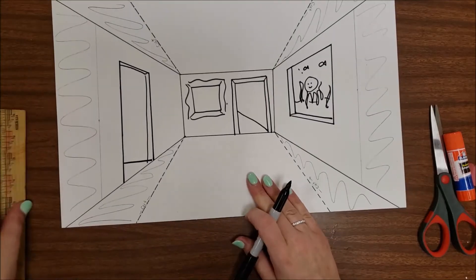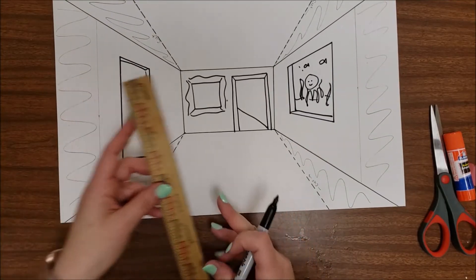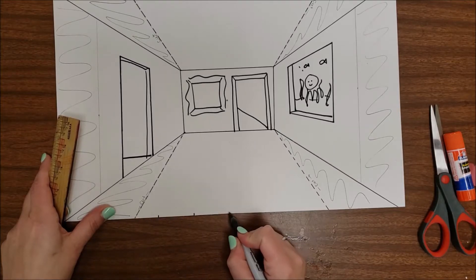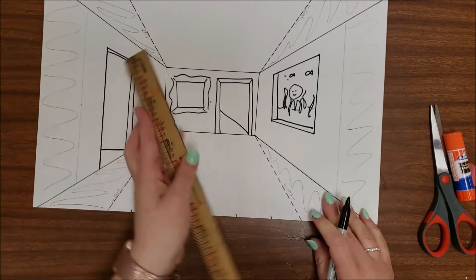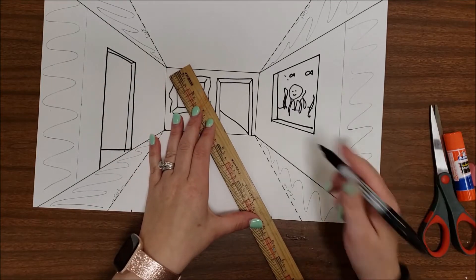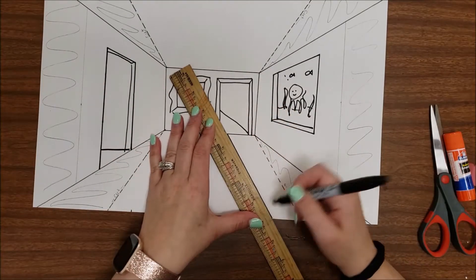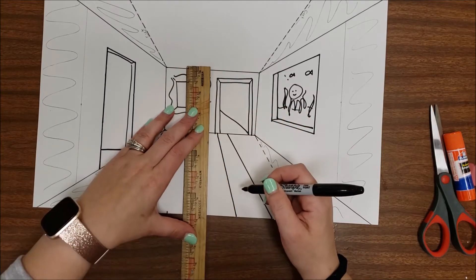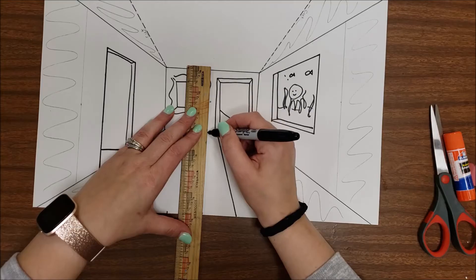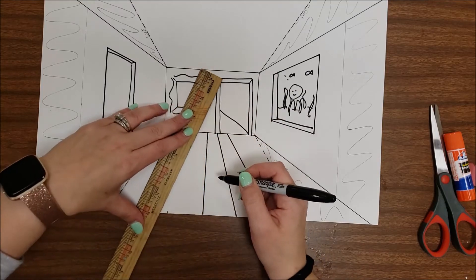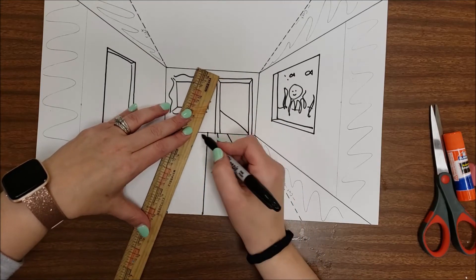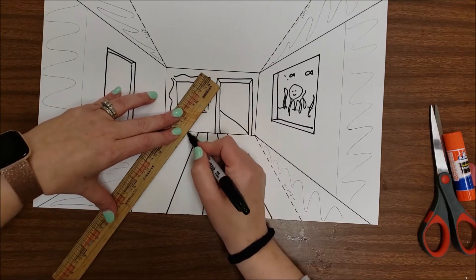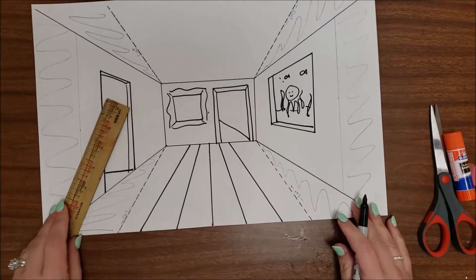For the floor, if you wanted to put tiles or wood down, you could make a few tick marks along the bottom. These are points where you can match your ruler up with that point. You don't want to draw the floor tiles on the wall, so make sure you stop at that line. You could also put area rugs, tables, or maybe there's a portal to a black hole in the middle of your floor. You decide.